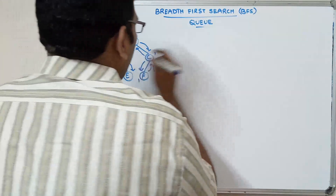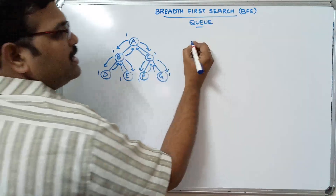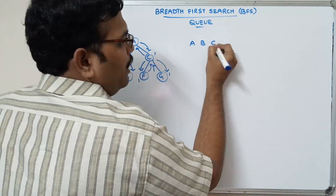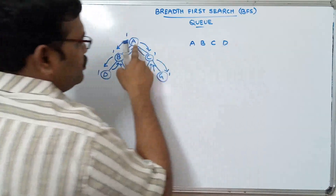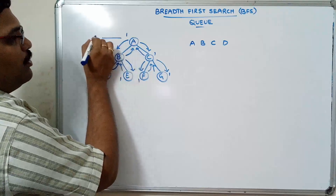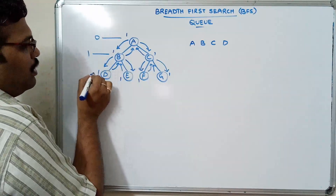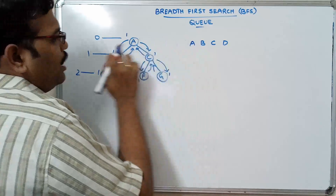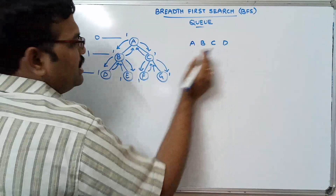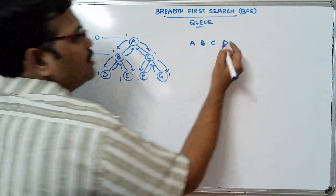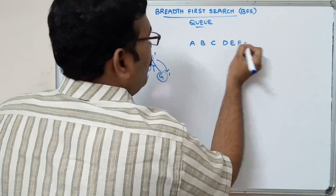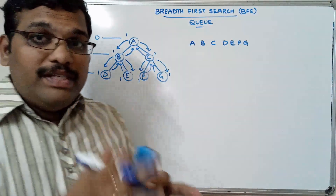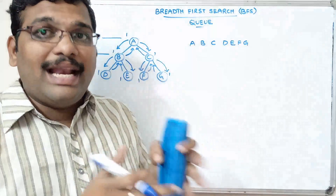After visiting all these nodes we get the order A, B, C, D, E, F, G. Level zero: visit node A. Level one: visit nodes B and C. Level two: visit nodes D, E, F, and G. We visit all the nodes level by level — that's why we call it breadth first search.